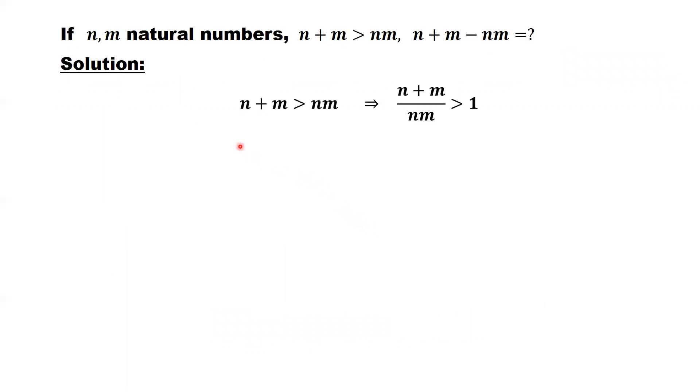First, we can simplify the given condition. Both sides divided by the right-hand side, n times m. We did not change the direction of the inequality because both numbers are natural numbers. Natural numbers are positive integers, so the product is positive.